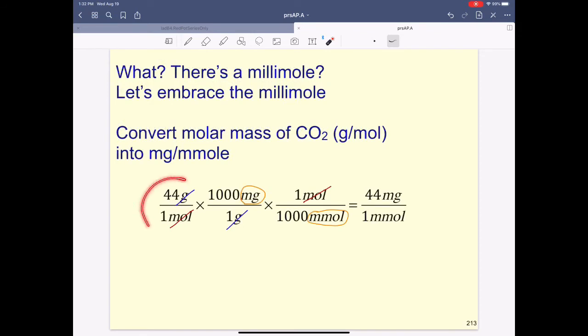Hopefully you were able to know that carbon dioxide is 44, and of course there's 1,000 milligrams in every gram, that allows us to cancel grams out, and of course there's 1,000 millimoles in every mole, that allows us to cancel moles out. And the two units left standing are of course milligram per millimole. That's very helpful. It's the same number, just different units.